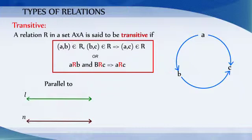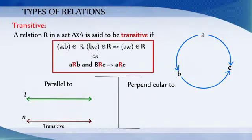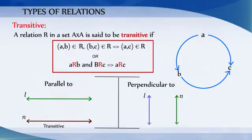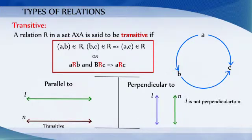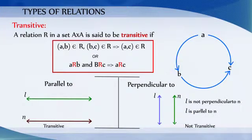Consider an example of the relation perpendicular to. If line L is perpendicular to M and M is perpendicular to N, then L will not be perpendicular to N. So the relation perpendicular to is not transitive.